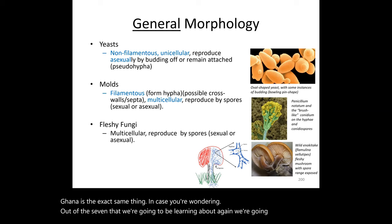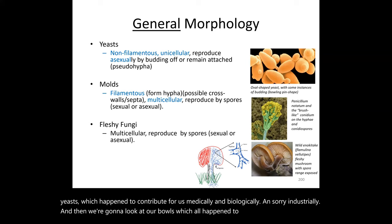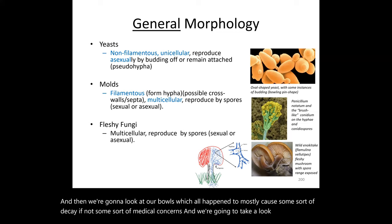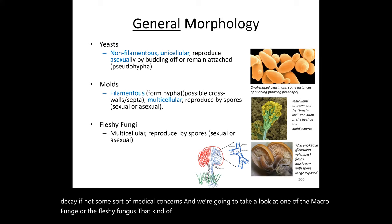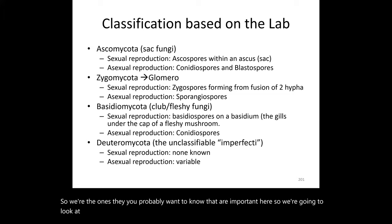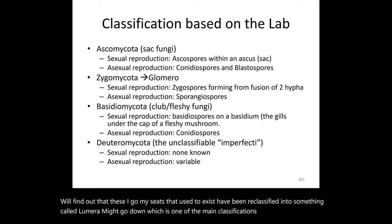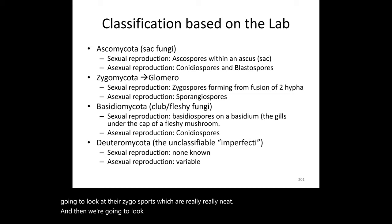Out of the seven classifications, we'll focus on yeasts for their medical and industrial applications, molds for their roles in decay and medical significance, and one macro fungus — a fleshy fungus resembling the classic mushroom — for lab observation. We'll look at Ascomycota for both sexual and asexual spore types, Glomeromycota and their zygospores, and Basidiomycota — the club fungi — which possess the basidium.